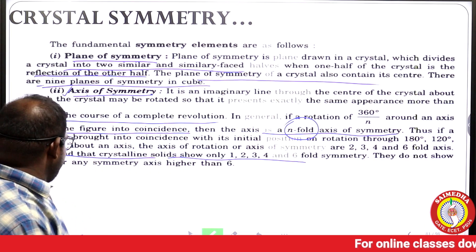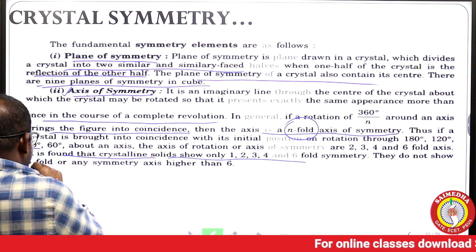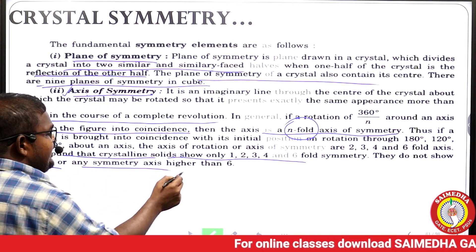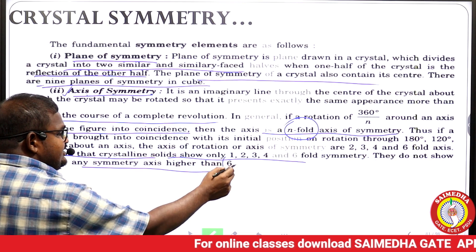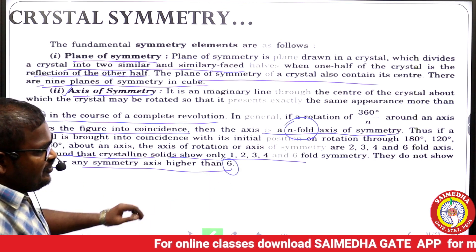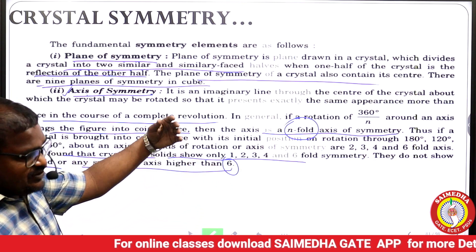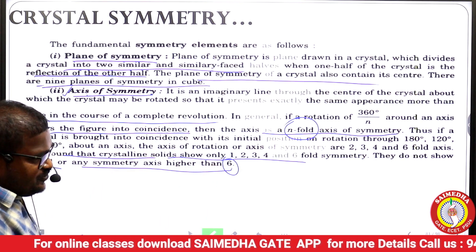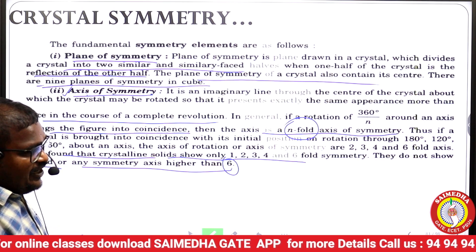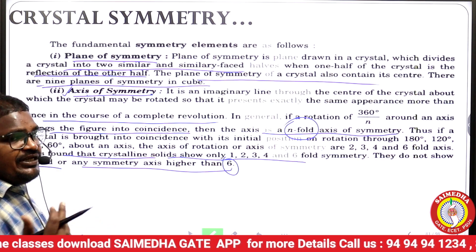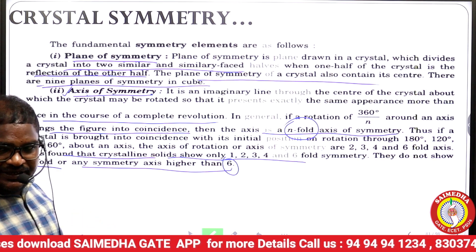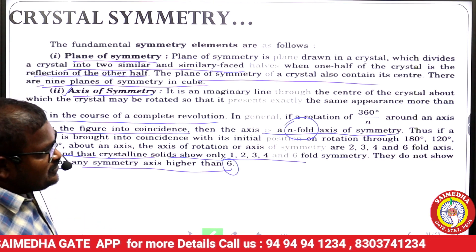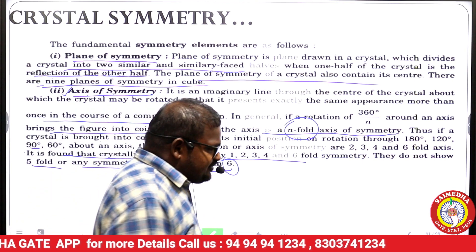It is found that crystalline solids show only one-, two-, three-, four-, and six-fold symmetry. They do not show five-fold or any symmetry axis higher than six. So only one, two, three, four, and six-fold symmetry exist — there is no five-fold and no symmetry higher than six-fold.